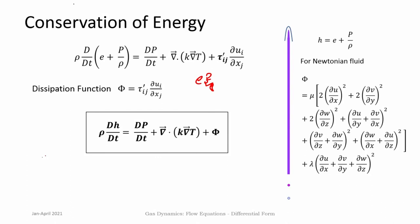From the energy conservation equation we get the equation for change in enthalpy: rho dh/dt = dp/dt + del dot (k del T) + viscous dissipation. This is the conduction heat transfer term and the viscous dissipation term. This is the energy conservation, the first law of thermodynamics — enthalpy, pressure, heat transfer, and viscous dissipation.